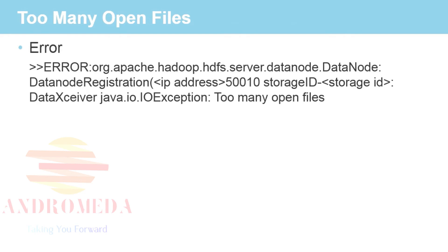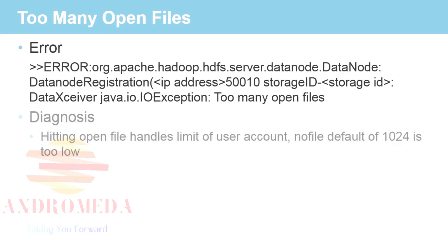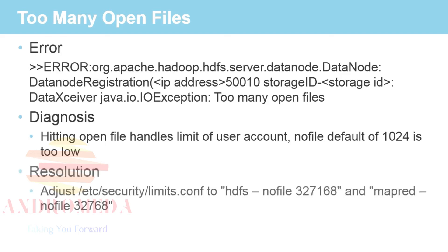Another system problem: too many open files. We got an error message that simply said too many open files. We immediately knew what this problem was. The diagnosis was we were hitting the open file handler limits on our user account. The default is set to only 1,024, and we know that Hadoop opens up lots and lots of files. Again, we went back to /etc/security/limits.conf and made some changes — setting HDFS nofiles to a number we sourced and validated from Hortonworks or Cloudera.